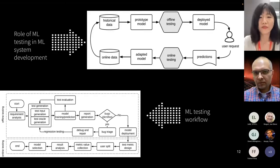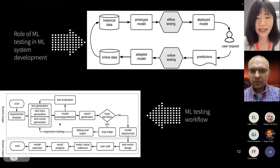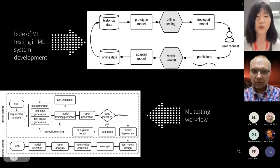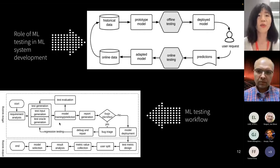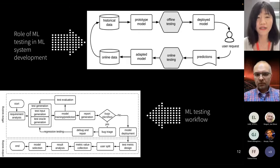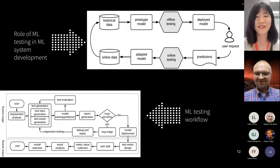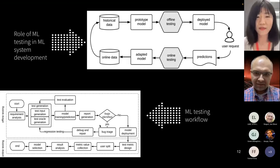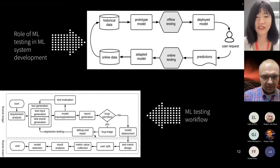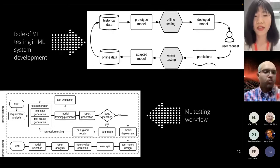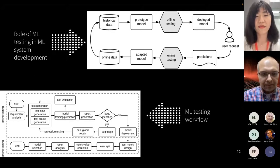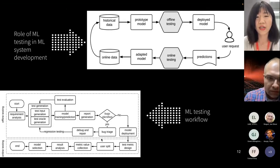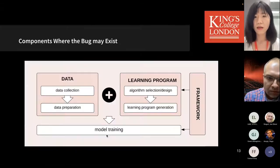There are many testing activities we can adapt from traditional software testing to improve trustworthy ML systems — requirement analysis, test generation, test evaluation, and bug report analysis. For test evaluation, Gunnar gave a great talk about using mutation testing on deep neural networks. Interestingly, for bug report analysis and bug triaging there are still very few publications — these remain open research opportunities.